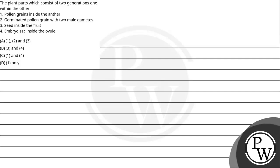The question says: the plant parts which consist of two generations, one within the other. Option one: pollen grains inside the anther. Option two: germinated pollen grain with two male gametes. Option three: seed inside the fruit. Option four: embryo sac inside the ovule.